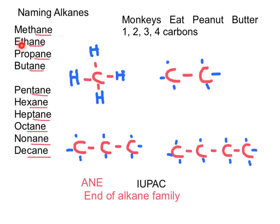The prefixes are: meth, eth, prop, but — from one carbon — up to dec for ten carbons. However, the end of the family name will vary. For example, if we have an alkene, the -ane ending will not be used, but we will change that family name suffix accordingly.